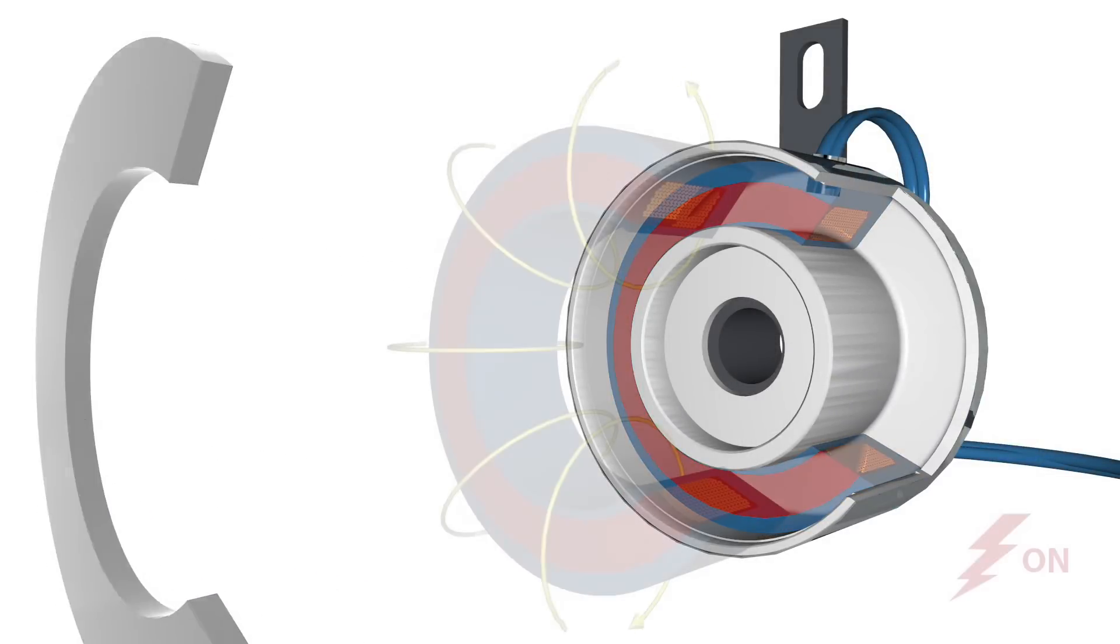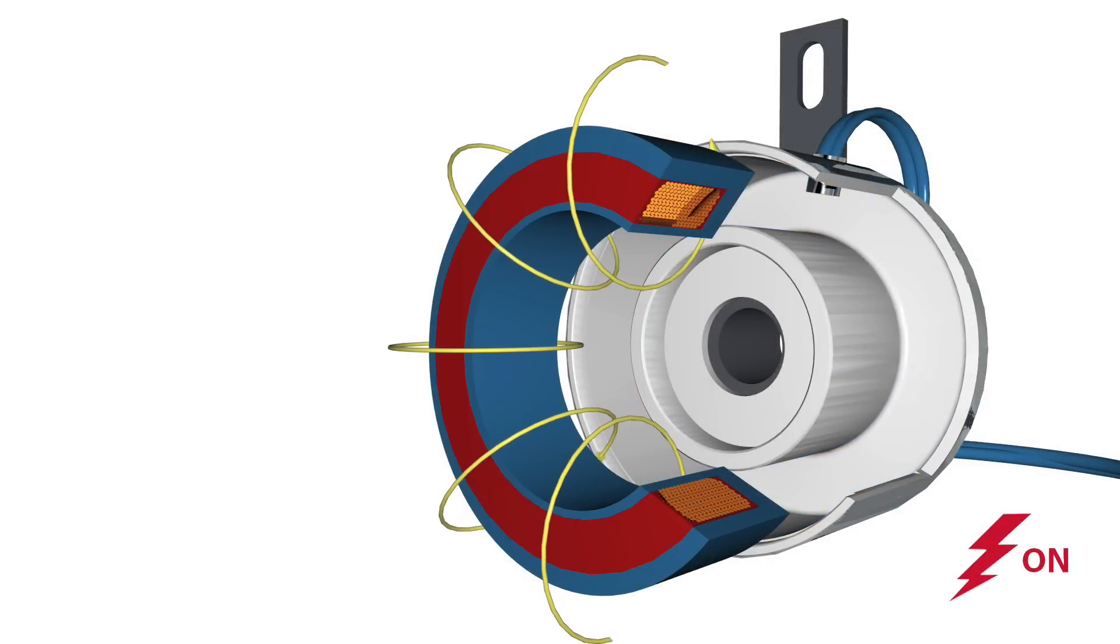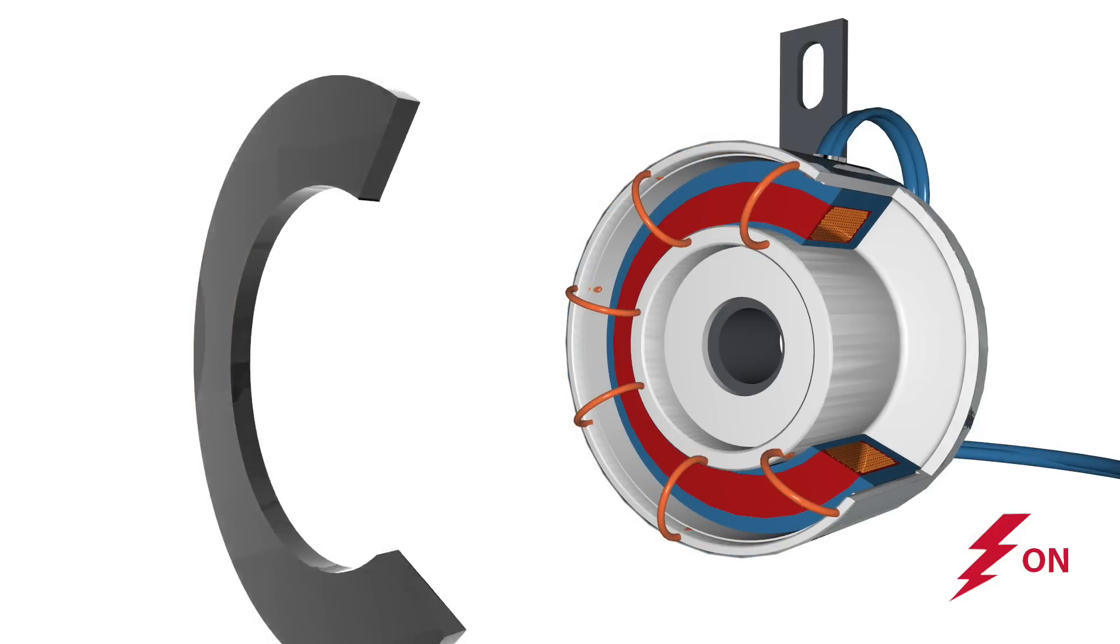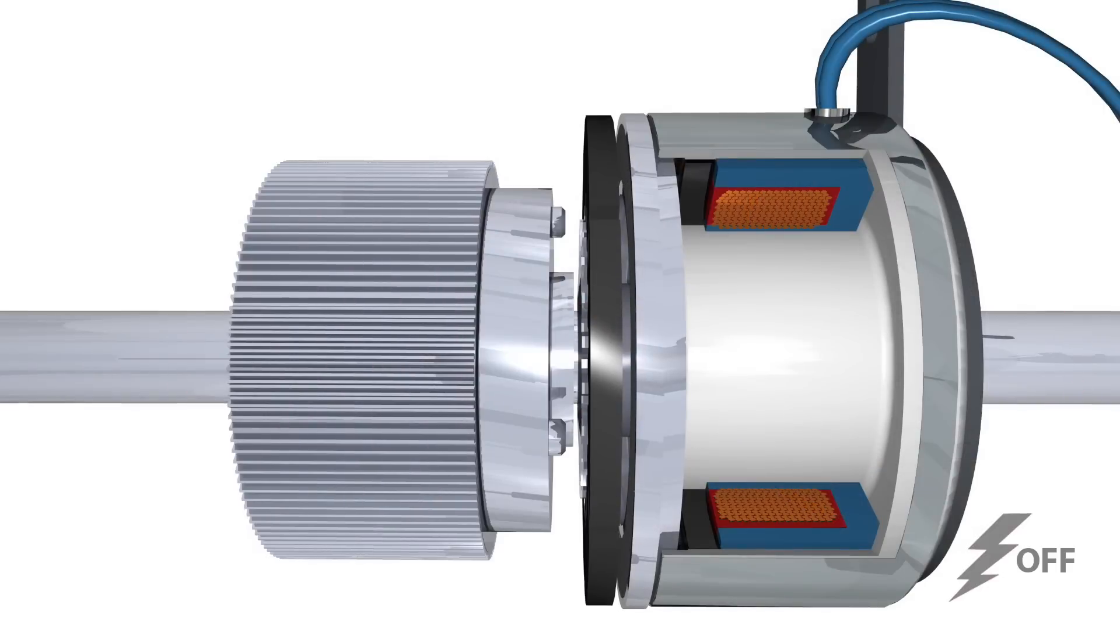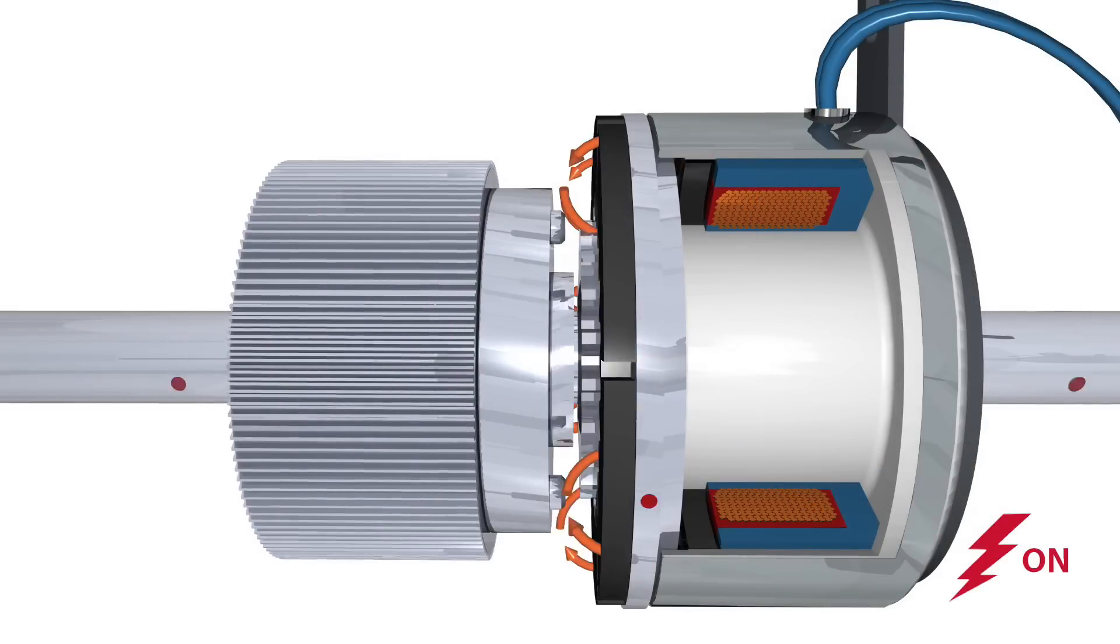Electromagnetic clutches operate via an electric actuation but transmit torque mechanically. When voltage or current is applied to the clutch, the coil becomes an electromagnet and produces magnetic lines of flux. This flux is then transferred through the small air gap between the field and the rotor.